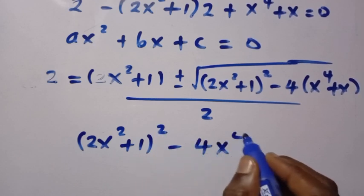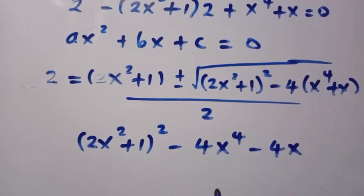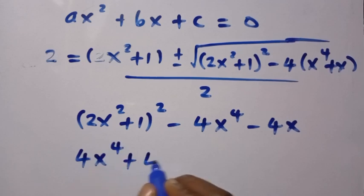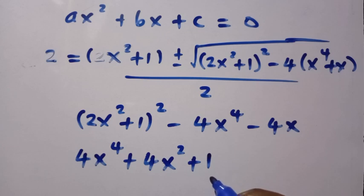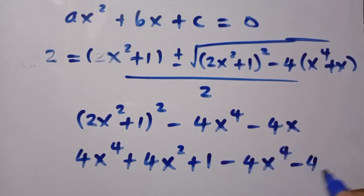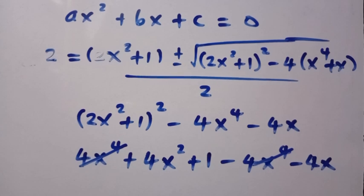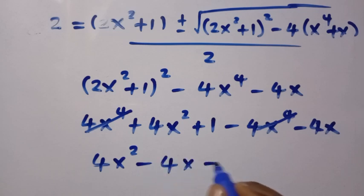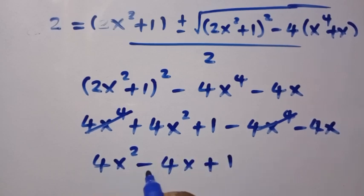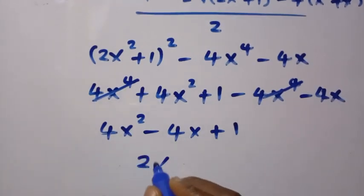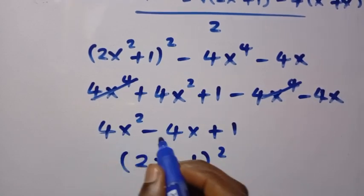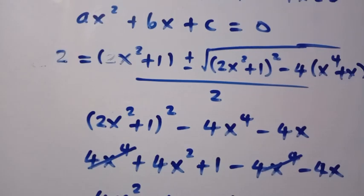Then we proceed by expanding the bracket. We expand (2x squared plus 1) raised to power 2, then minus 4x raised to power 4 minus 4x. The expansion gives us 4x raised to power 4 plus 4x raised to power 2 plus 1, and here is minus 4x raised to power 4 minus 4x. So the plus 4x raised to power 4 and minus 4x raised to power 4 cancel, and we have 4x raised to power 2 minus 4x plus 1. This equals (2x minus 1) raised to power of 2.